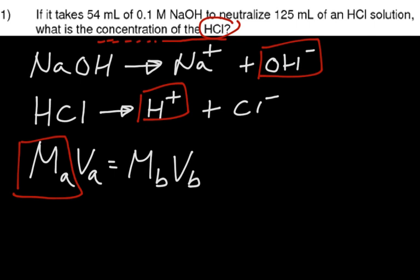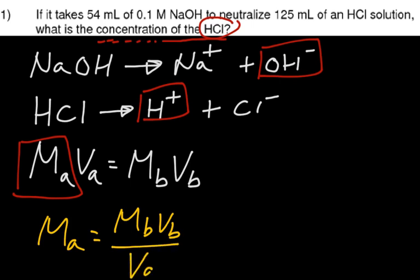And as before, Ma would be equal to MbVb over Va. You should always rearrange your letters first, then you plug your numbers in. If you just plug numbers in, you're more apt to make a mistake, and you'll not be able to find it.